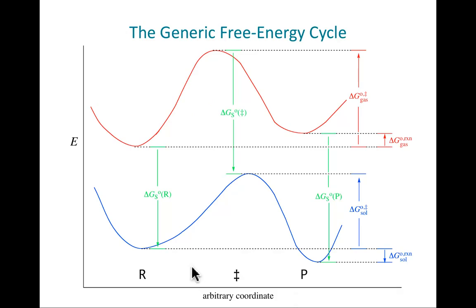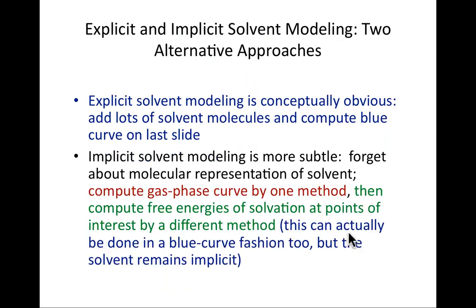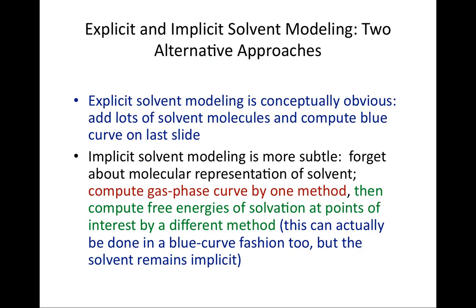So if I include tens, hundreds, thousands of solvent molecules, sure enough, I'll have some sort of a curve in solution. Now, it may be a little bit tricky to identify a reaction coordinate, because thousands of molecules means many thousands of degrees of freedom. So getting one single coordinate may be a bit of a challenge, but it certainly, as I say, is conceptually pretty clear.